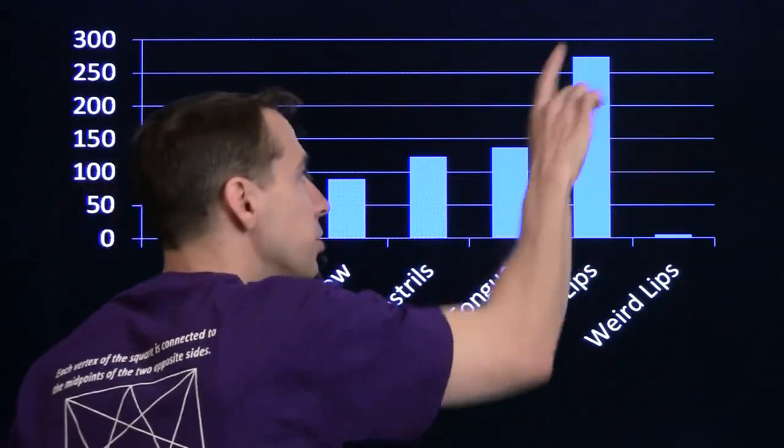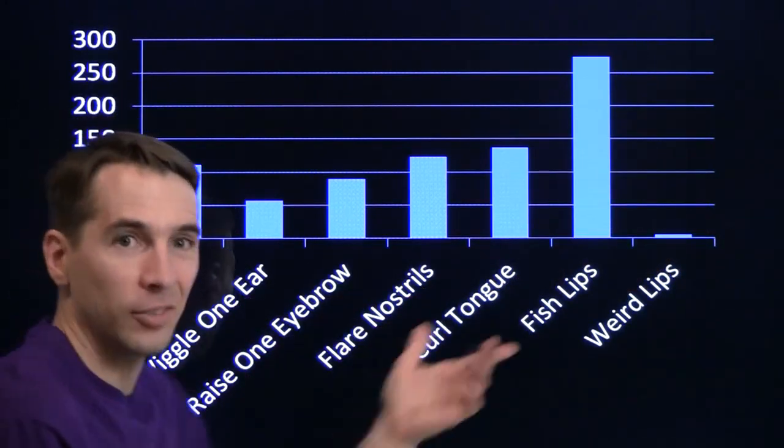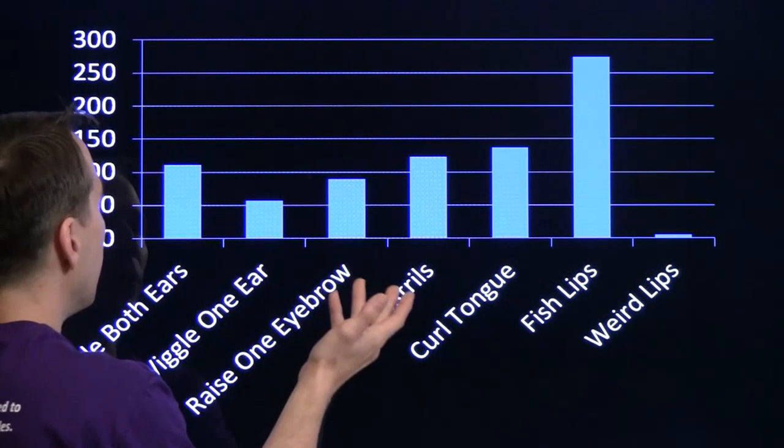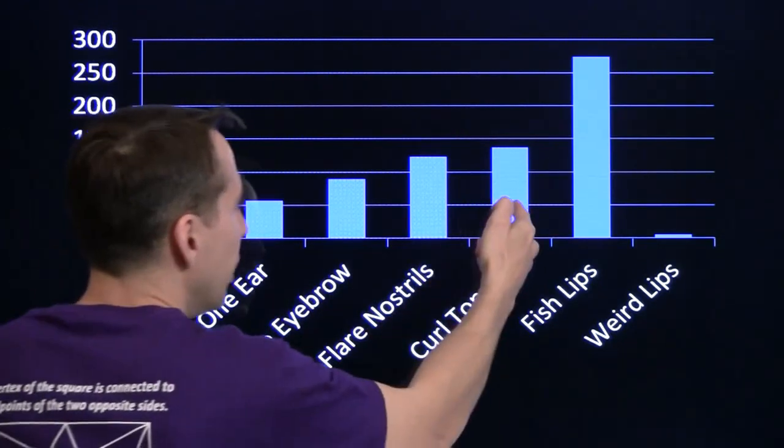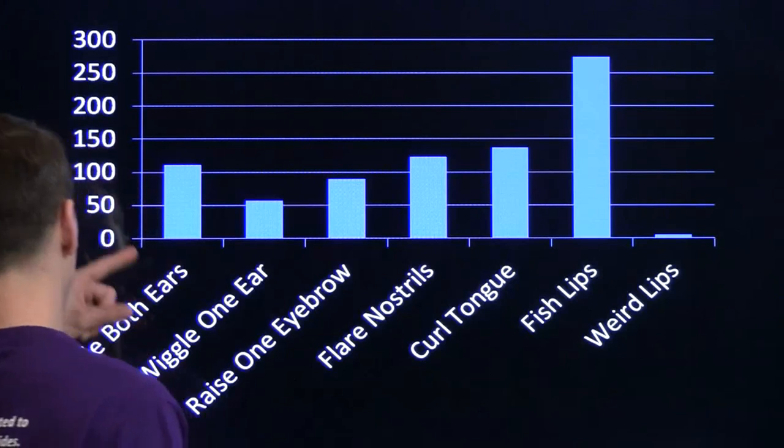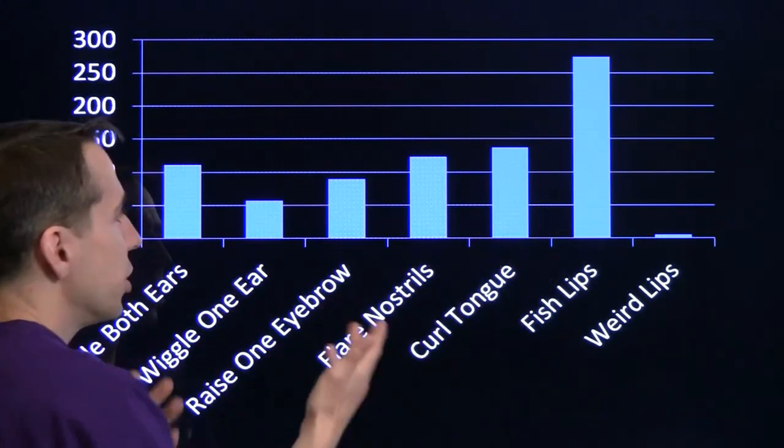Fish lips, most common. Most students can do that. Weird lips, that's the hardest. Almost no one can do that. You have to be a real freak to be able to do that. Now, you can also compare any two of these. You can quickly see curled tongue is easier than wiggle one ear. Flare nostrils is easier than wiggle both ears.